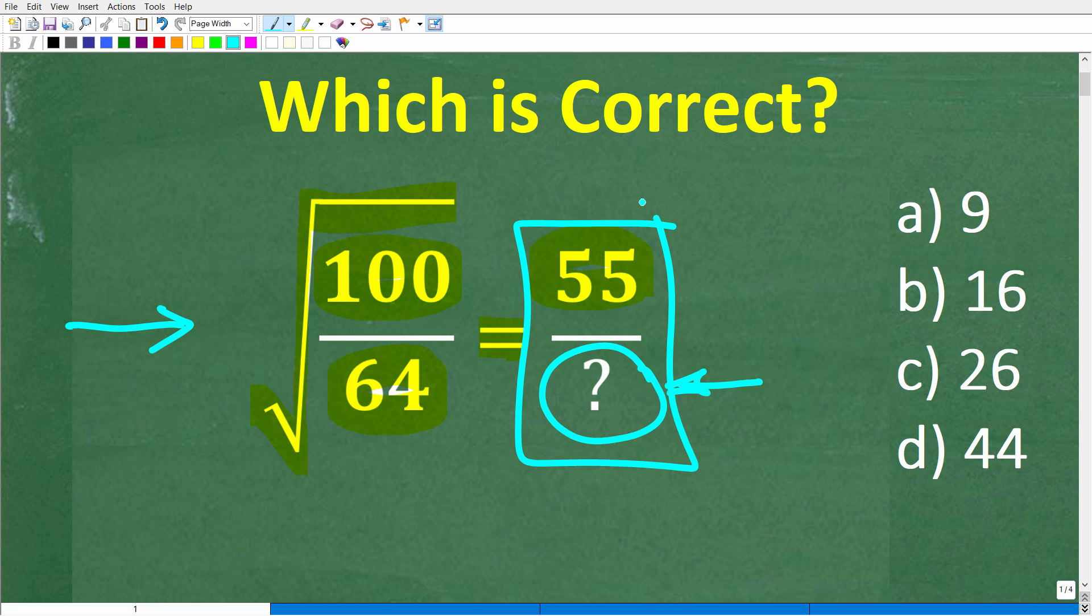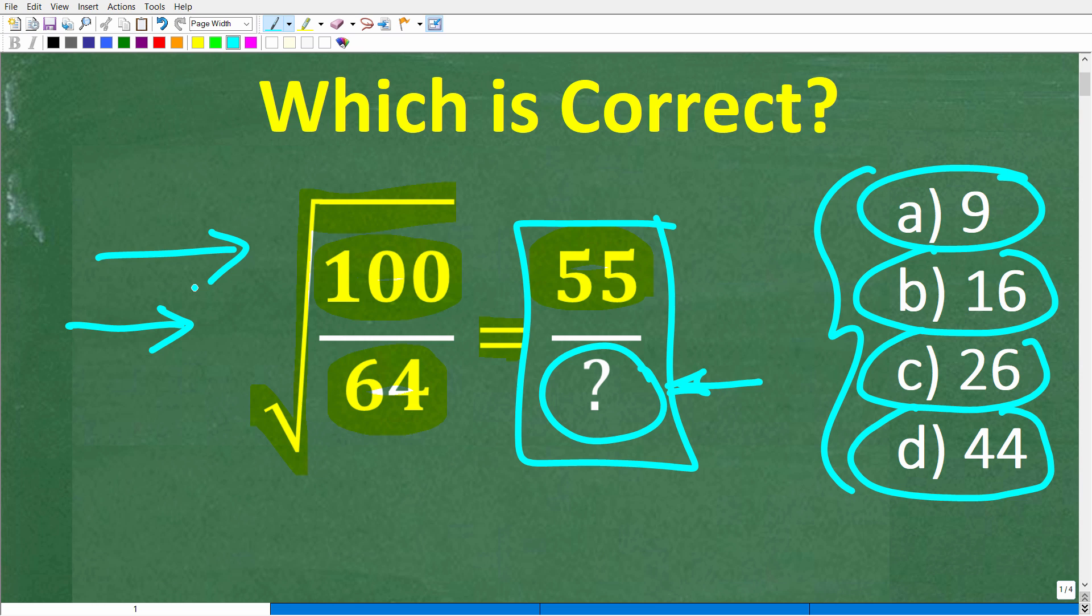Now we do have a multiple choice question here. Let's take a look at our answers. So A is 9, B is 16, C is 26, and D is 44. Now you don't really need a calculator, but feel free to use one if you think that's going to be the difference in terms of you solving this math problem. But if you have the answer, go ahead and put that into the comment section. I'll share the correct answer in just one second. Then of course we'll walk through step-by-step how to solve this math problem.